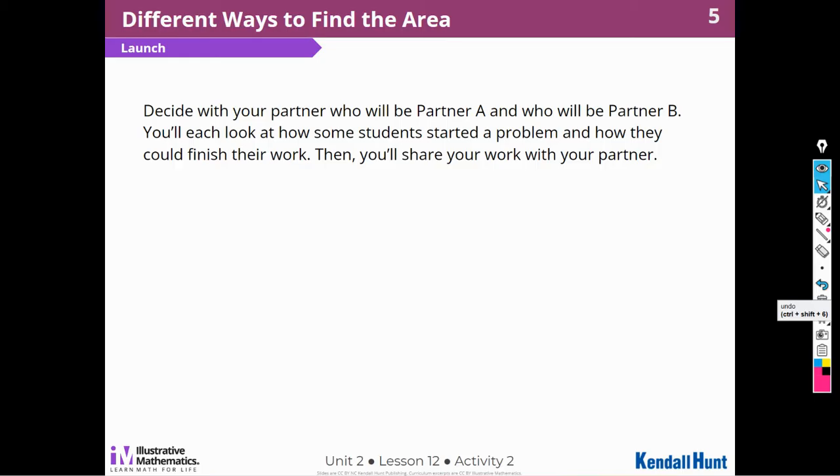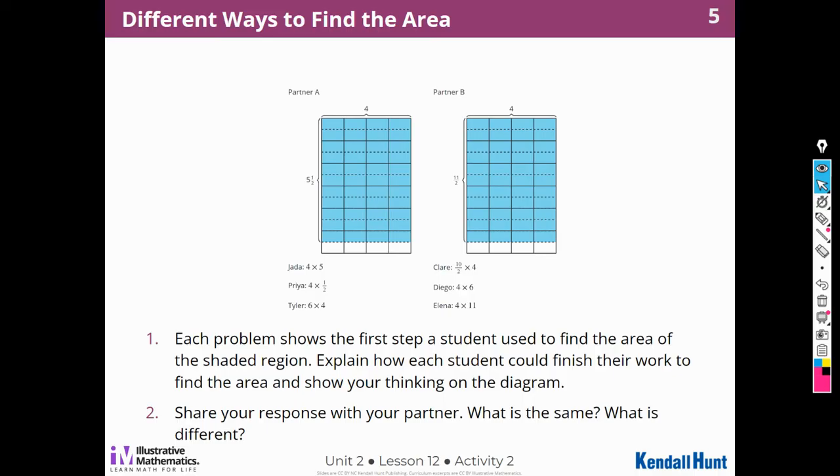So this would be some partner work that you would do in your class. You're going to decide who will be partner A and who will be partner B. You'll look at how some of the students started a problem and how they could finish their work. Then you'll share your work with your partner. So, of course, I don't have any partners in class right now, so I'm going to do it all. So each problem shows the first step a student used to find the area of the shaded region.